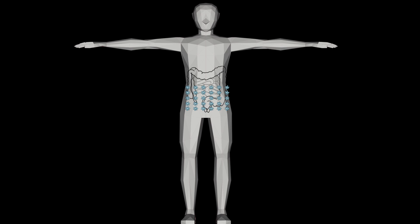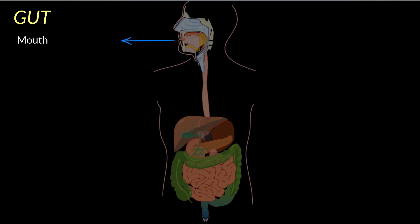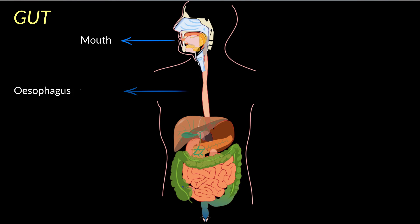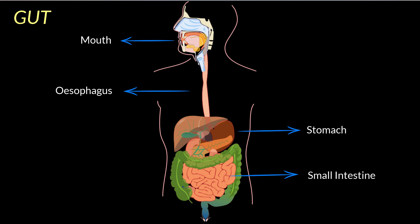Our gut consists of a number of organs starting from our mouth, esophagus, stomach, intestine till our rectum. Our gut is inhabited by an incredible number and variety of microorganisms. In case you are wondering what these microbes do in our gut, let me tell you a few of the most crucial roles that these microorganisms play.